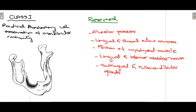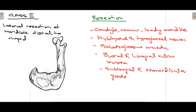When performing Class 1 mandibulectomy, the alveolar process is removed along with the lingual and buccal sulcus mucosa. Some part of the mylohyoid muscle, which forms the floor of the mouth, is also resected. The lingual and inferior alveolar nerves may also be damaged as they run through this region. In some cases, the sublingual and some mandibular glands are also removed.